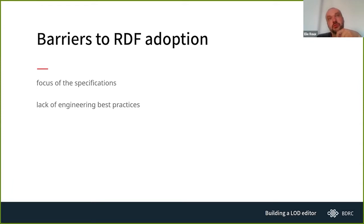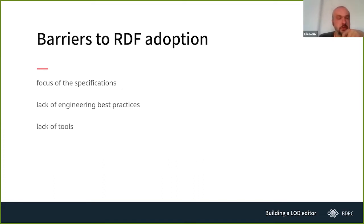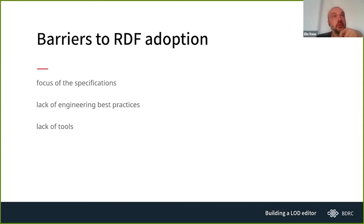There is quite a strong lack of engineering best practices, and that creates a very strong barrier. When you start to want to implement linked open data, you realize there are a lot of decisions that need to be made that are not obvious, and there are very few discussions about it. That creates a lack of tools — for instance, we had to develop our own RDF editor.